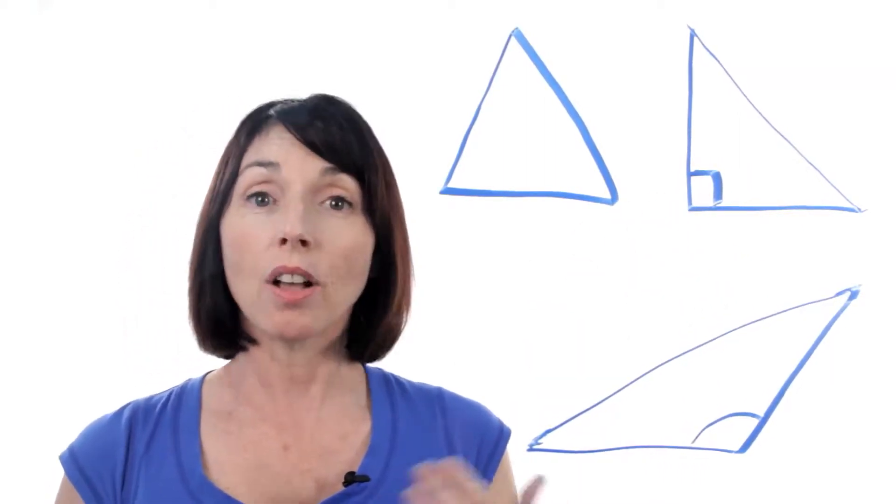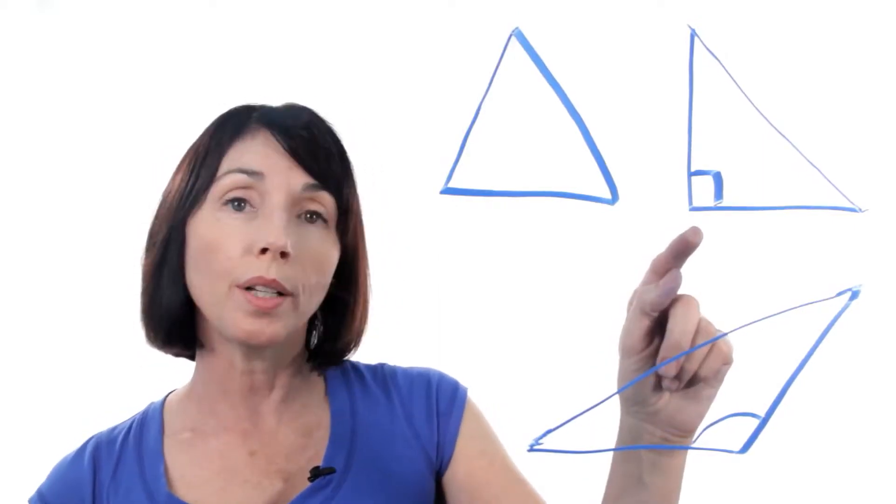If a triangle has one right angle, which would be this, you always denote it with that little box there, that's called a right triangle. It has one right angle and two acute angles.